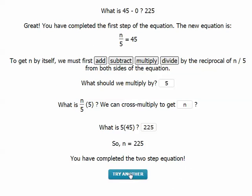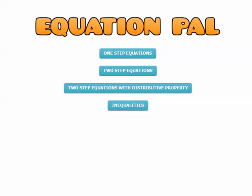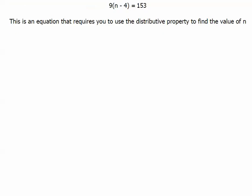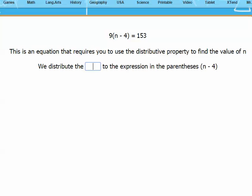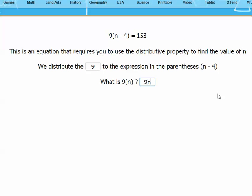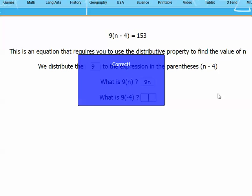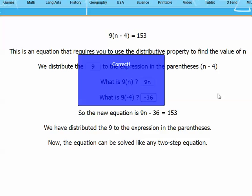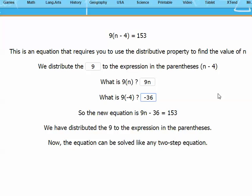Let's try one more. Let's do a two-step equation using the distributive property. So I have 9 times n minus 4 equals 153. So first we distribute the 9 to the expression in the parentheses n minus 4. So what is 9 times n? That's 9n. 9 times negative 4 is negative 36. So my new equation, as you see, is 9n minus 36 equals 153.